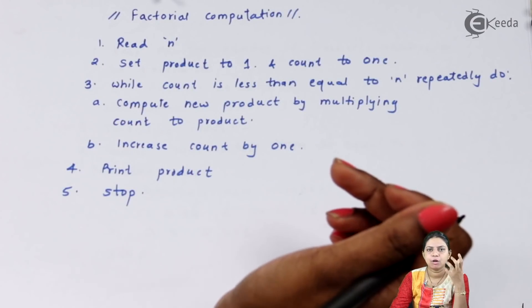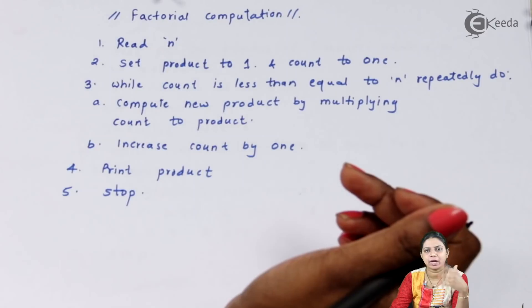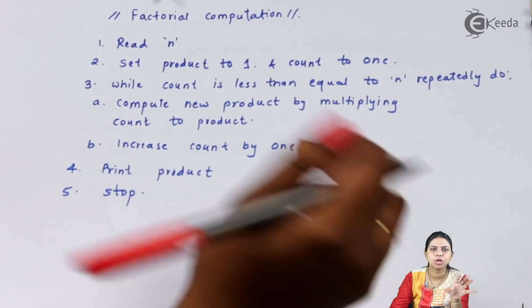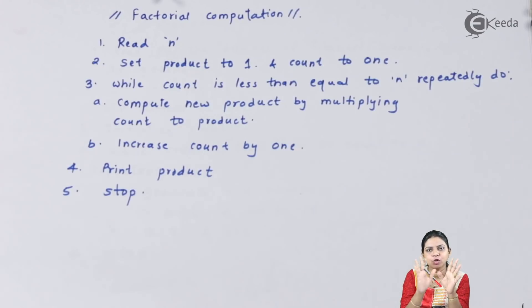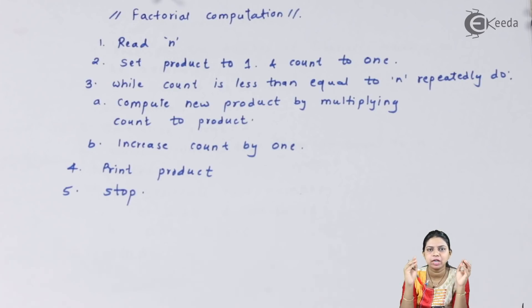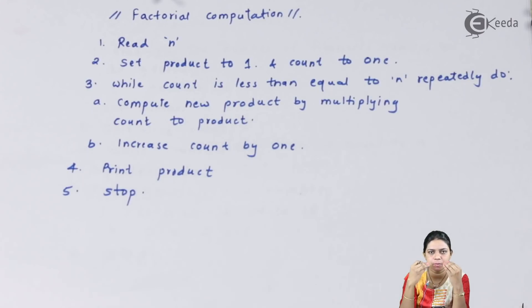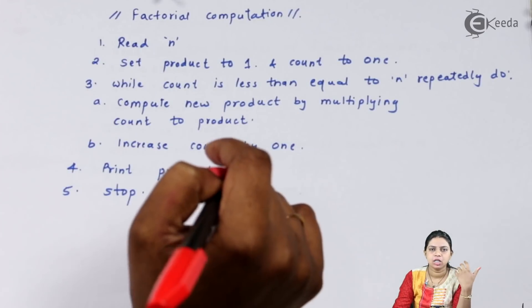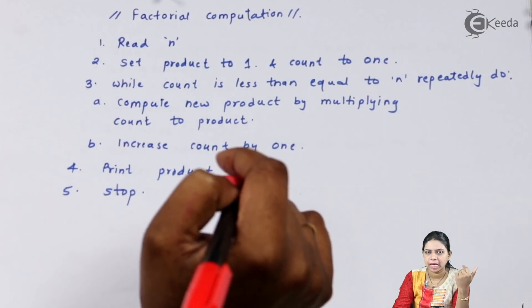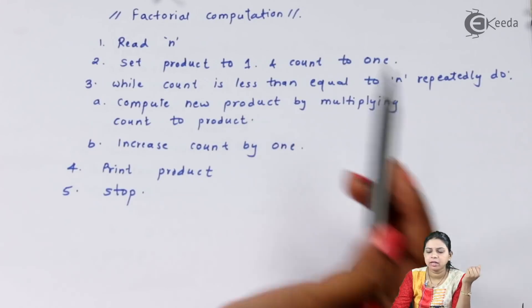Now we have more examples of algorithms. Factorial computation — we have seen programs for factorial using simple loops, functions, and recursion. To calculate factorial, we enter a value and perform repeated multiplication. The algorithm begins: Step 1: Read n, the number whose factorial is to be calculated. Step 2: Set product to 1 and count to 1.